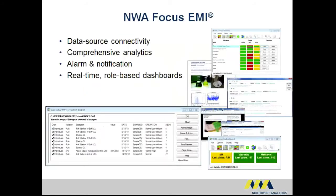The dashboards allow companies to focus attention on the most important parameters that affect plant operations, providing the context and additional information needed to know when to take the appropriate action. You may have an operator take action if a certain alarm violates an unusual pattern, yet this may all happen well below the spec limits set by the company and might not have even been noticed with existing trend chart tools. These are some of the ways NWA's Focus EMI leverages existing process information systems with real-time analytics to improve efficiency and reduce costs.